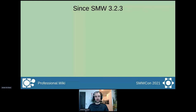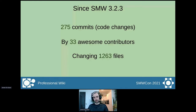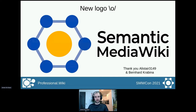Now let's look at what happened in numbers since the last stable Semantic MediaWiki release, which was 3.2.3. We had over 275 commits by 33 amazing contributors, changing a grand total of over 1,000 files. And that's just for Semantic MediaWiki itself — it doesn't include changes to all the various extensions and tools that are part of the Semantic MediaWiki ecosystem. We've also got the new logo, and a big thank you to Alistair for creating it and to Bernard for kicking off the process.